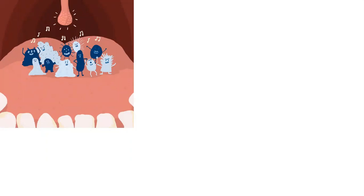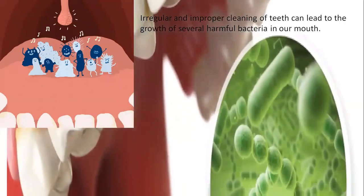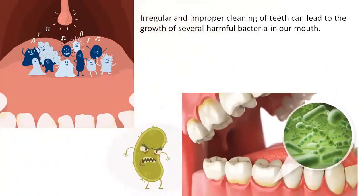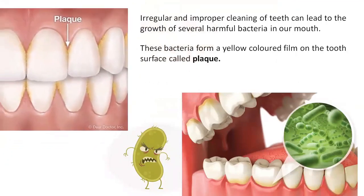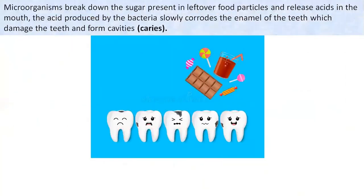Most of the time a delicate balance is maintained in our oral ecosystem, but a problem arises when certain strains of bacteria grow vigorously. This is because of the irregular and improper cleaning of the teeth. Irregular and improper cleaning of teeth can lead to the growth of several harmful bacteria in our mouth, and these bacteria form a yellow colored film on the tooth surface called plaque.